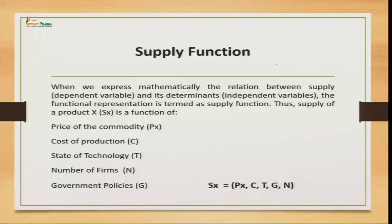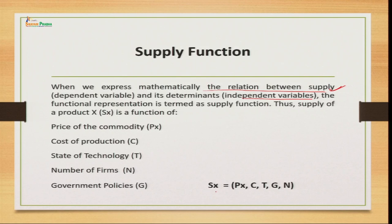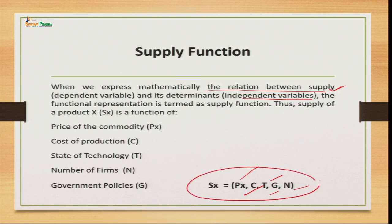Let us understand the supply function. Supply function is a mathematical relationship between supply and its determinants. Supply is the dependent variable and all other determinants are independent variables. The supply of a product X is a function of: price of commodity X, cost of production, technology, government policies, and number of firms. This is how we represent the supply function — just as we represented the demand function, using a mathematical expression.